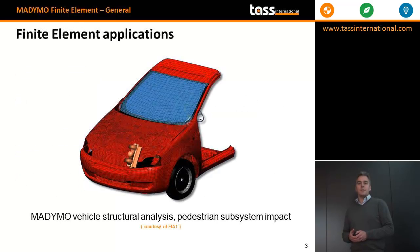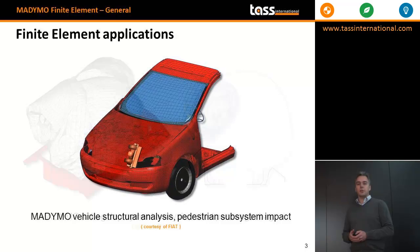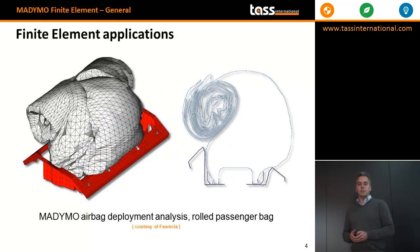Some finite element applications that are typically modeled with MARIMO are vehicle structures for pedestrian modeling, front end vehicle structures, and restraint systems such as the airbag models shown here, but also finite element belt models.